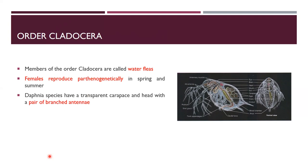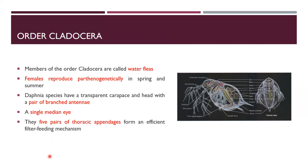Order Cladocera includes water fleas such as Daphnia. Females reproduce by parthenogenesis. They have branched antennae and five pairs of thoracic appendages.